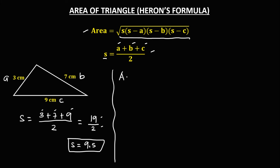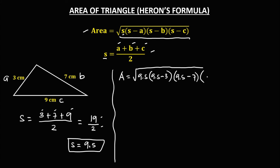Now to solve for the area using the formula: Area equals the square root of s times (s minus a) times (s minus b) times (s minus c). So that's the square root of 9.5 times (9.5 minus 3) times (9.5 minus 7) times (9.5 minus 9).